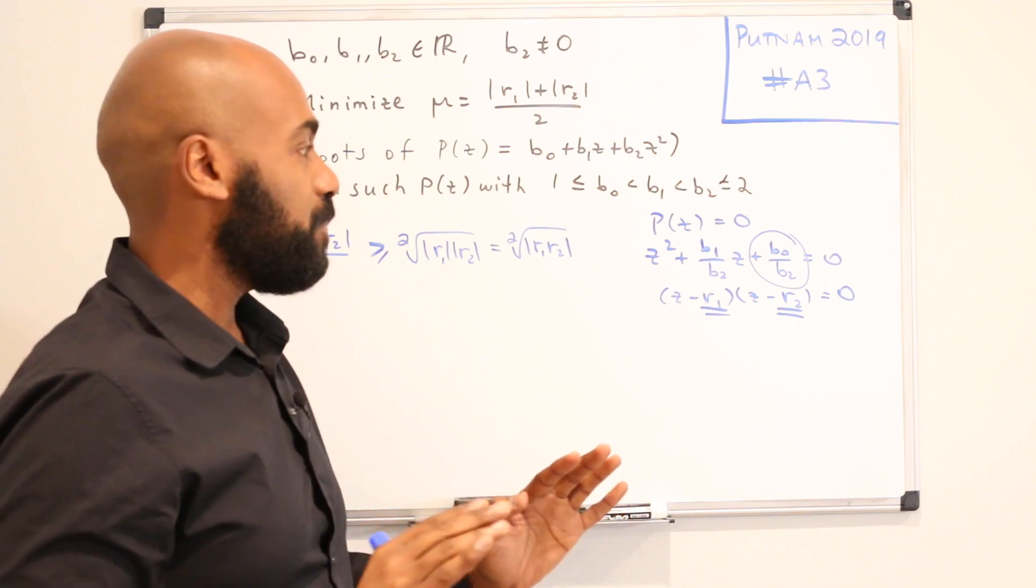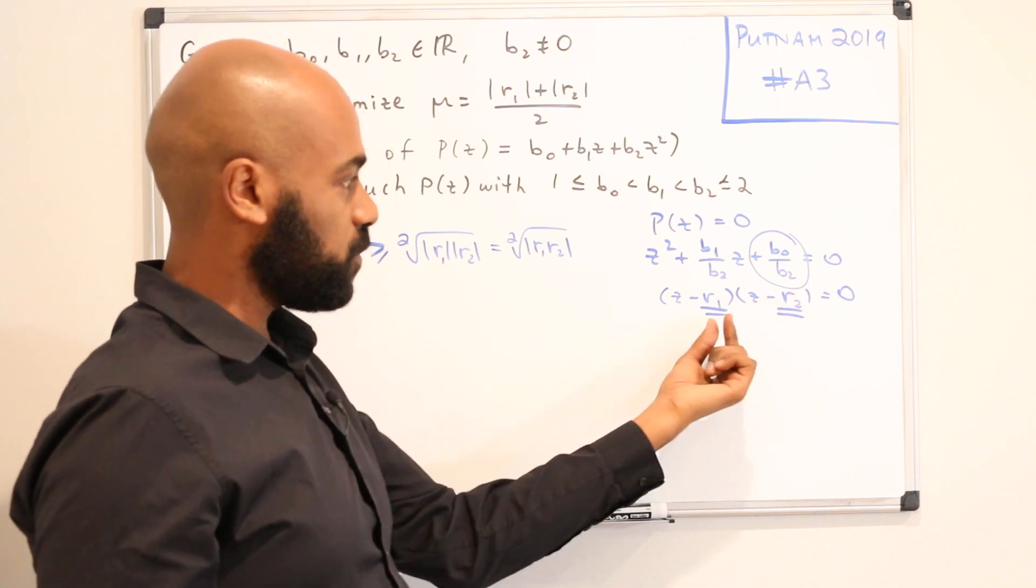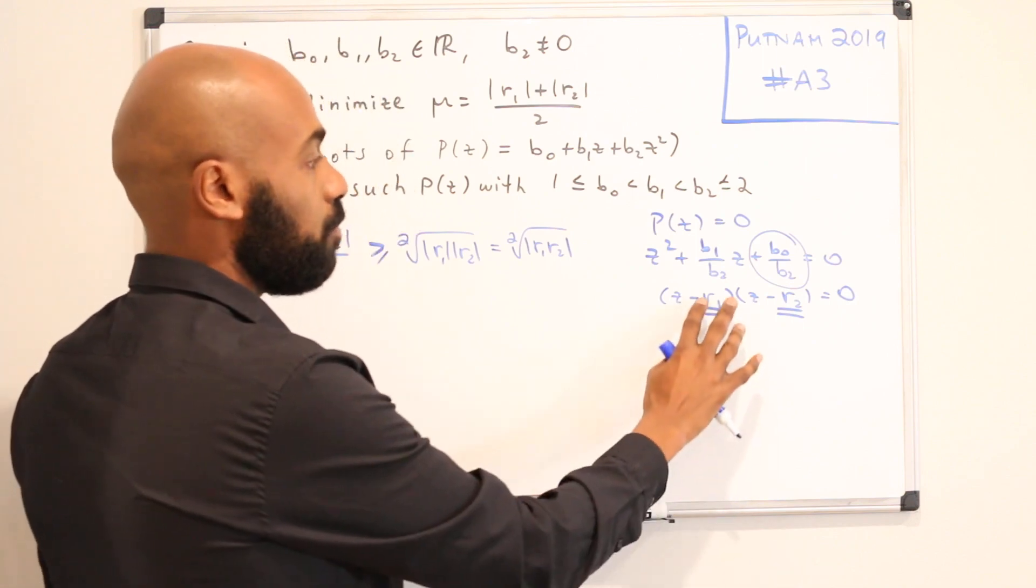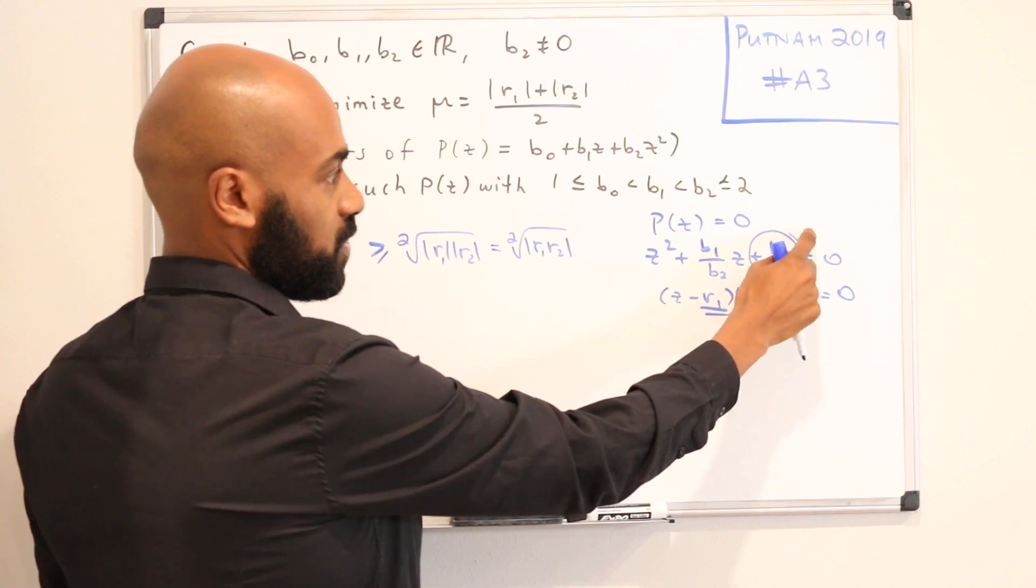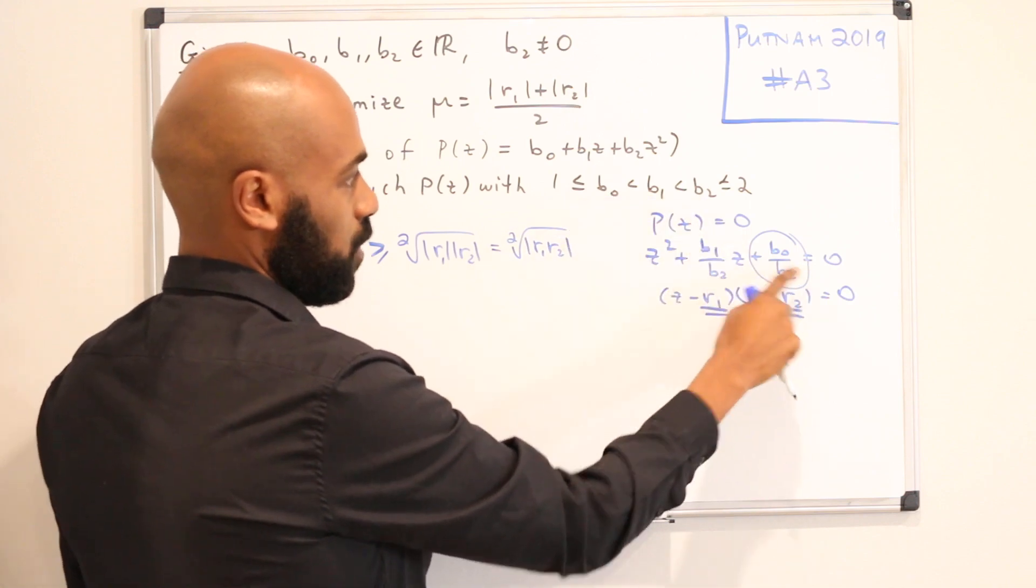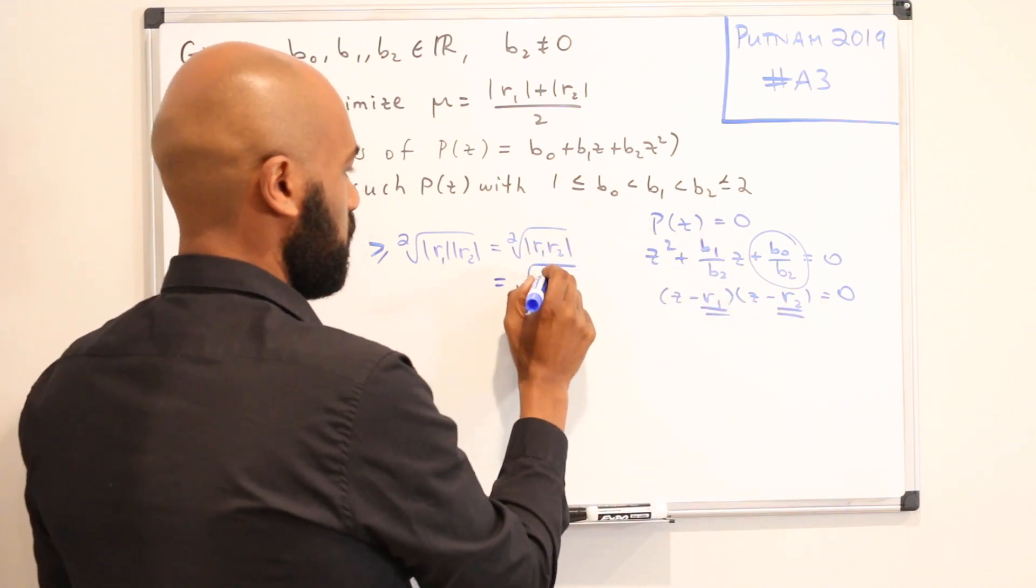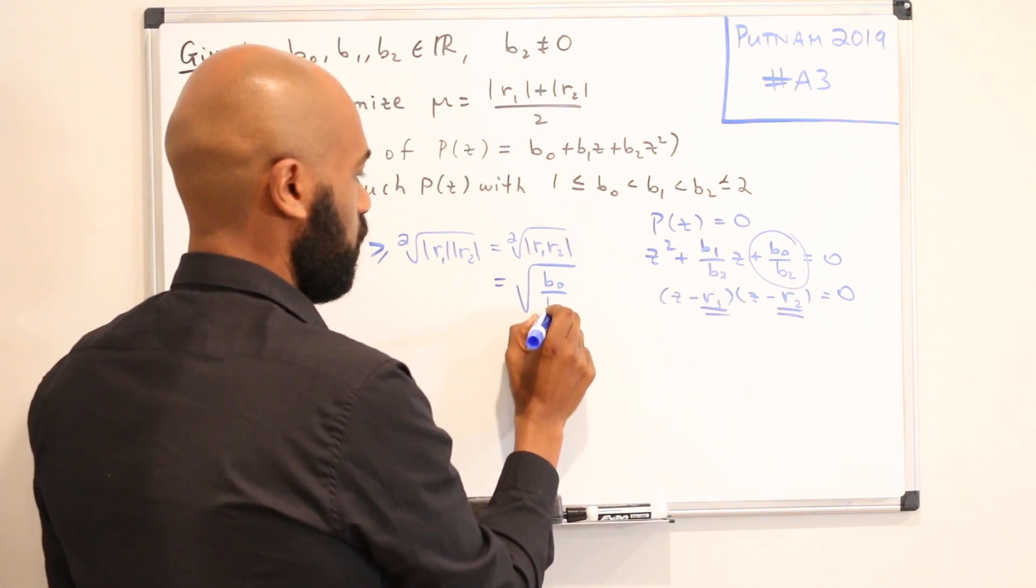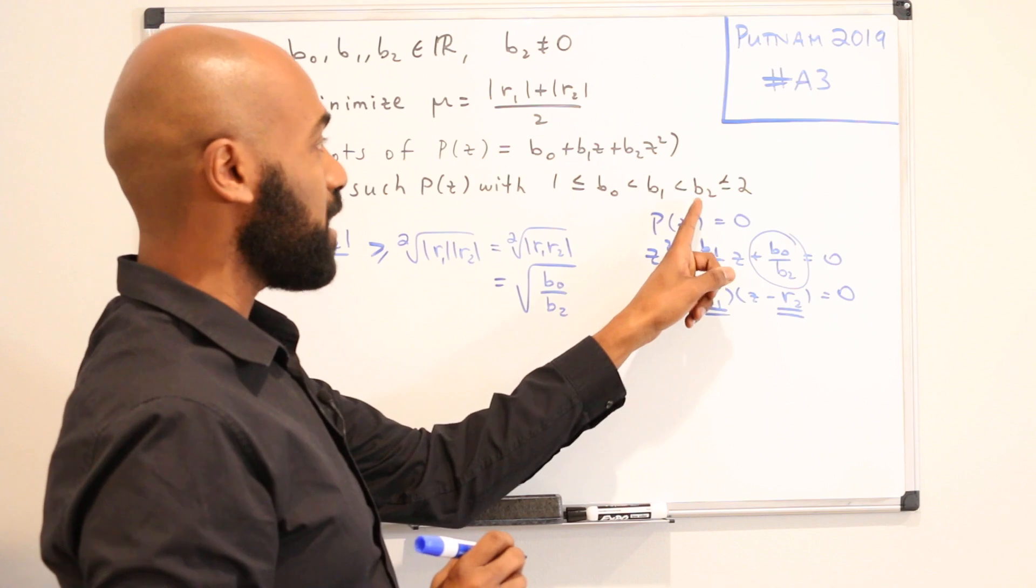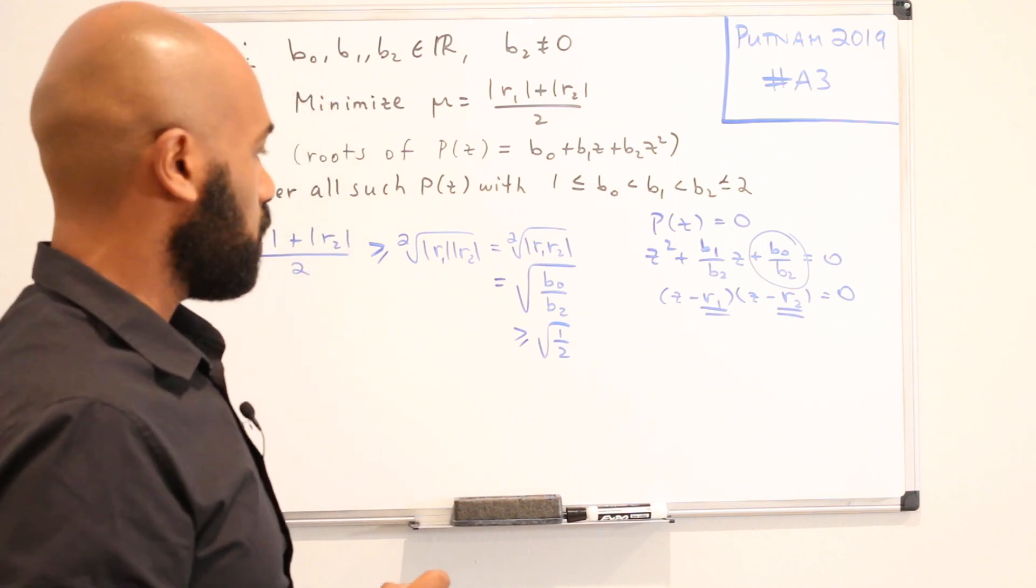Now we want to keep in mind what happens when we switch to the 2019 degree case. There we'll get the negative of the product of the roots because we have an odd number of copies of linear factors here. But nonetheless, the modulus of the resulting product is still going to be this number here because this thing is a positive number because b0 and b2 are both positive. So this expression, and this will generalize, is b0, the square root of b0 over b2. Now b0 is at least 1 and b2 is at most 2. So this thing is at least 1 over root 2.